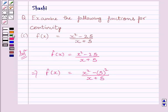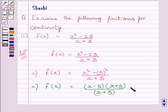Now, this implies f(x) is equal to x minus 5 multiplied by x plus 5 upon x plus 5. We know, a square minus b square is equal to a minus b, a plus b.